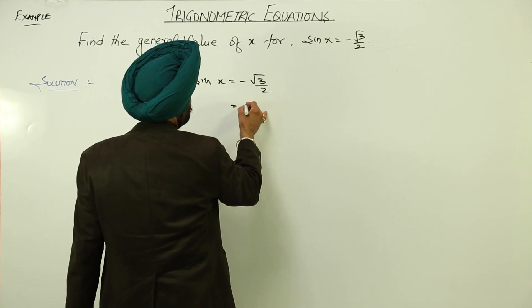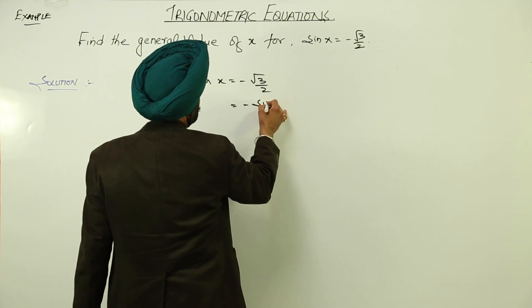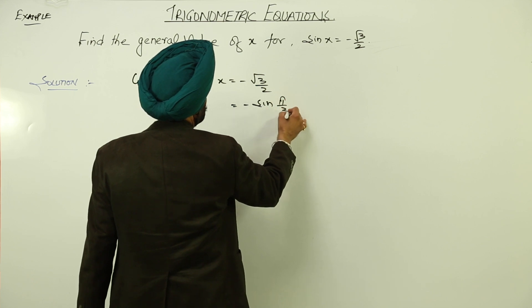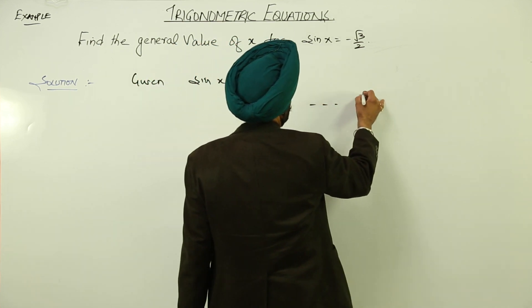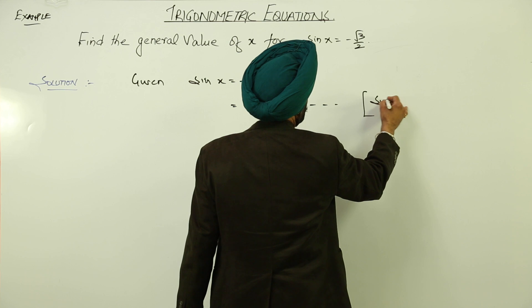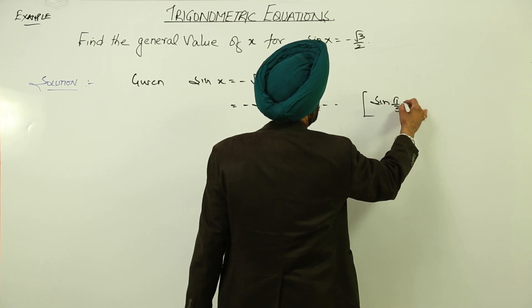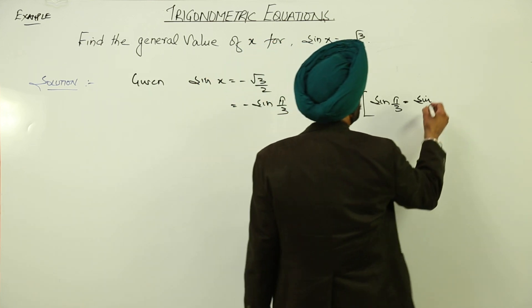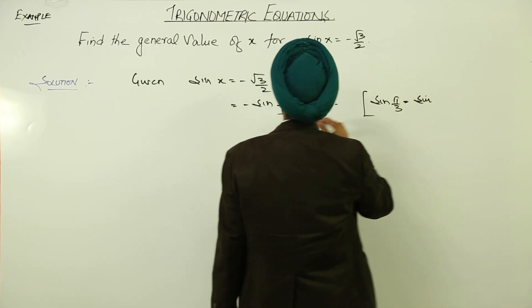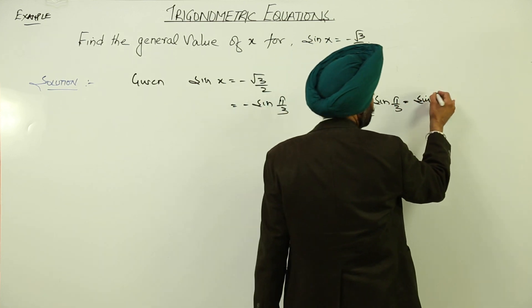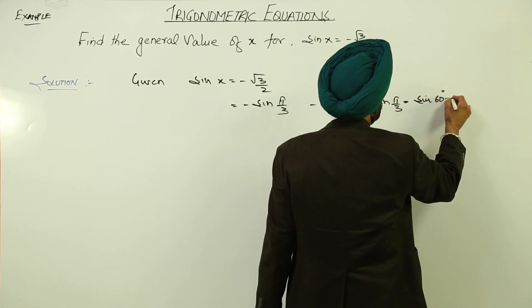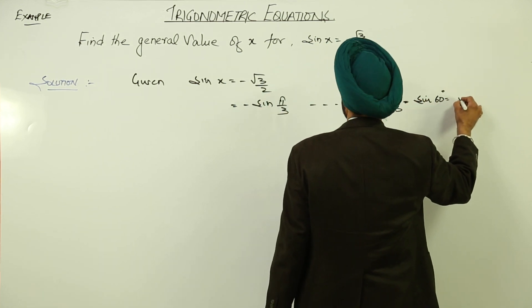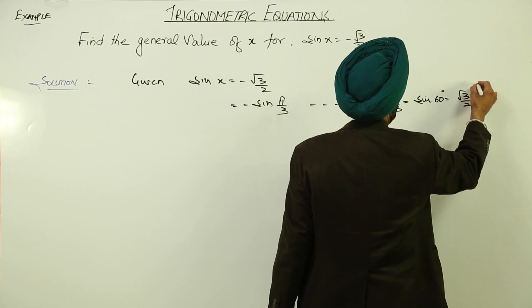This we can write as sin pi by 3. Sin pi by 3, in degrees if you want to write it, is 60 degrees. And we know that this is root 3 by 2.